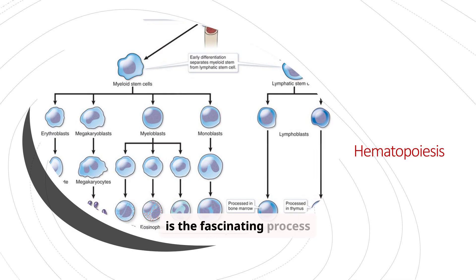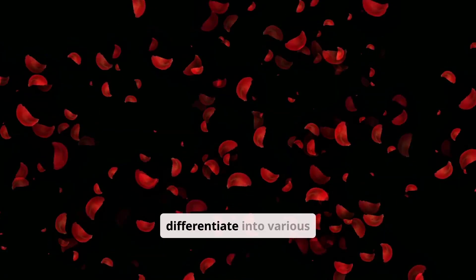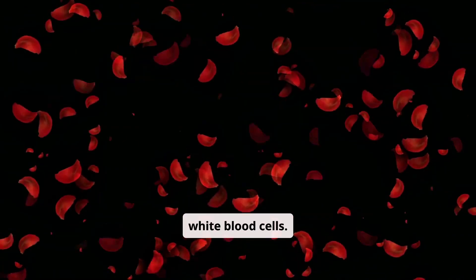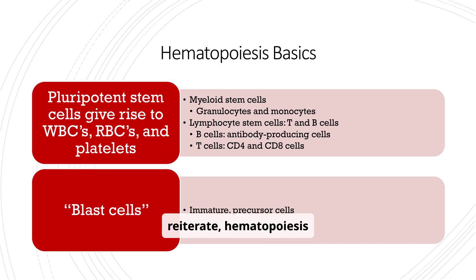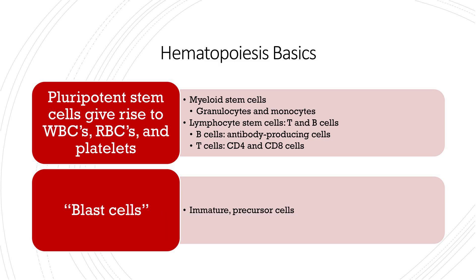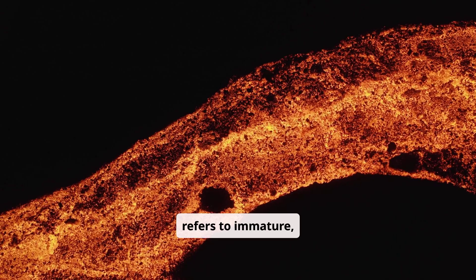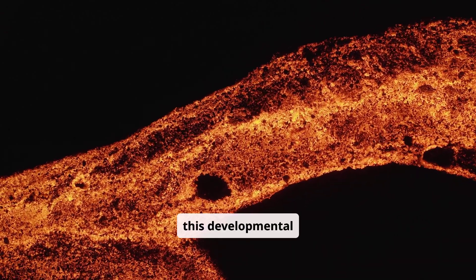Hematopoiesis is the fascinating process of blood cell formation. It all starts with myeloid and lymphatic stem cells, which then differentiate into various blood cell types, including erythrocytes, megakaryocytes, and the different types of white blood cells. Hematopoiesis begins with pluripotent stem cells, which give rise to all our blood cells — WBCs, RBCs, and platelets. It's also important to remember the term blast cells, which refers to immature precursor cells in this developmental process.